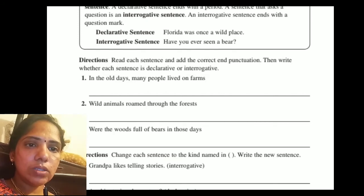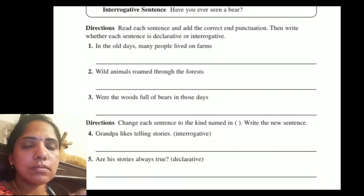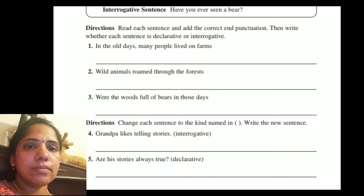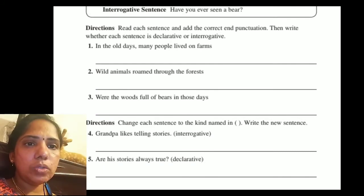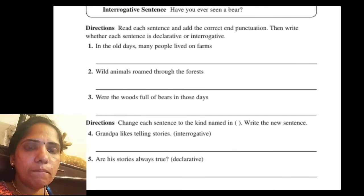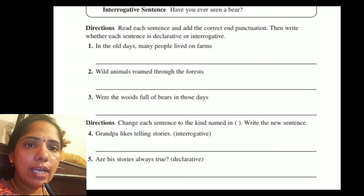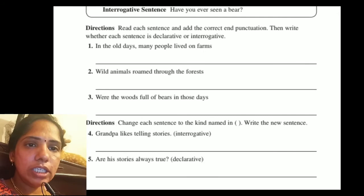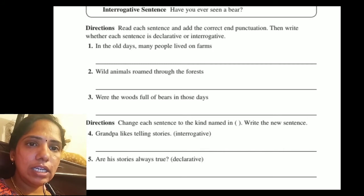Now change each sentence to the kind named and write the new sentence. First: 'Grandpa likes telling stories.' This should be changed to an interrogative sentence. The interrogative form is: 'Does grandpa like telling stories?'